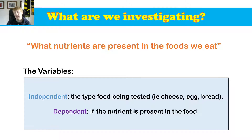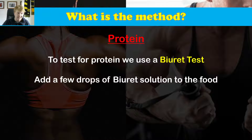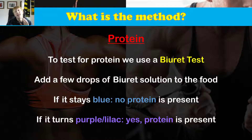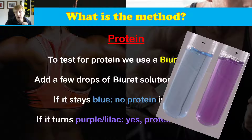I'm about to run you through those four tests that you need to remember and be able to do. Test for protein: to test for protein we use what's called a Biuret test. All you do is add a few drops of the Biuret solution to the food. If it stays blue — which is the color of the Biuret solution — no protein is present. If it turns purple or lilac, protein is present. The blue one on the left means no protein, and the purple-lilac one means that protein is present.